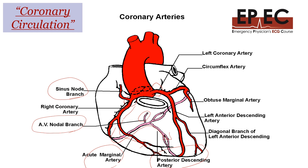Bradyarrhythmias in general are far more common with right coronary occlusion compared to left coronary occlusion, simply because the blood supply to both the SA node and the AV node comes mainly from the right coronary artery.